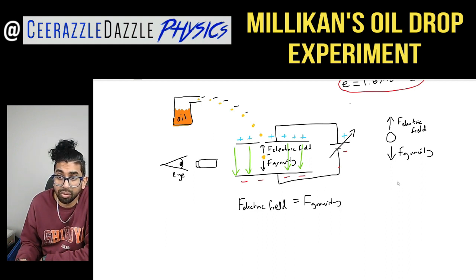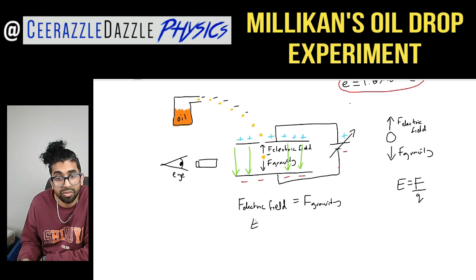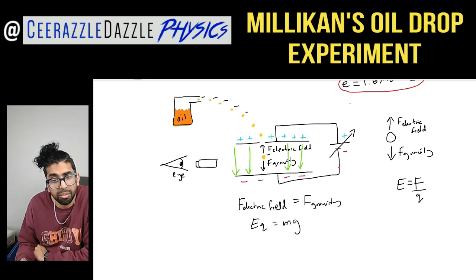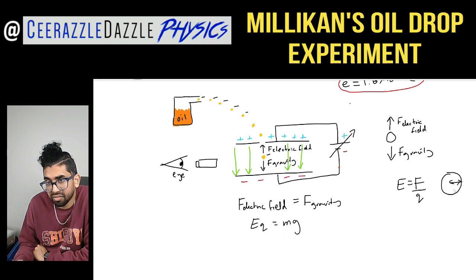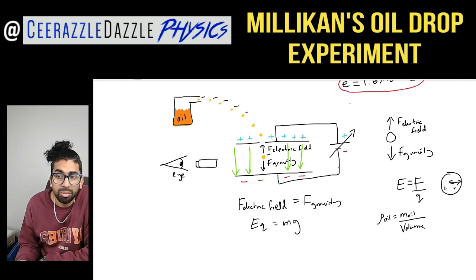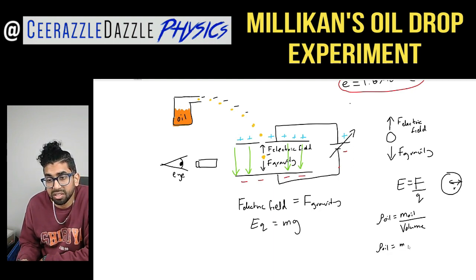The electric field strength E equals force per unit charge, so the force is E × q. This equals the force due to gravity, which is mass × g. Now we're going to get rid of mass using density. The oil drop is spherical with radius r, so density ρ = mass / volume = mass / (4/3 π r³). Therefore mass = (4/3) π r³ × ρ_oil.